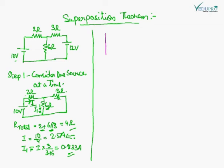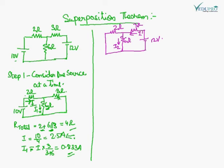While considering the second source, the first source should be short circuited. This gives us 2 Ohm, 6 Ohm, 3 Ohm, and the voltage source is 12 Volt. From the circuit it is clear that 2 Ohm and 6 Ohm are in parallel, and together they are in series with 3 Ohm. Solving this we get 4.5 Ohm total equivalent resistance.